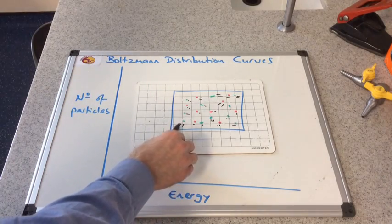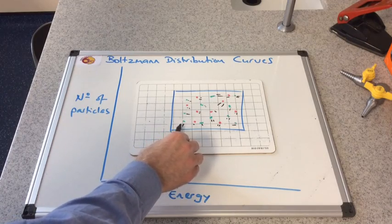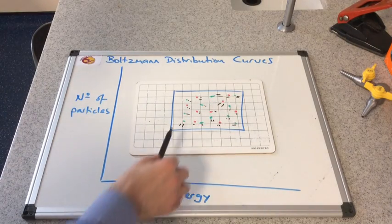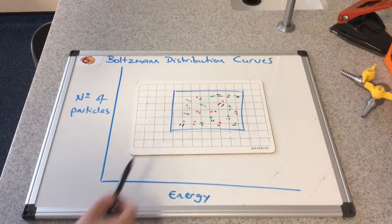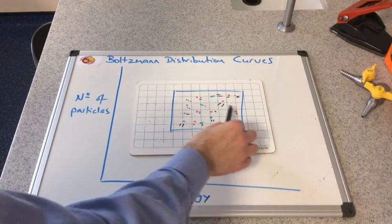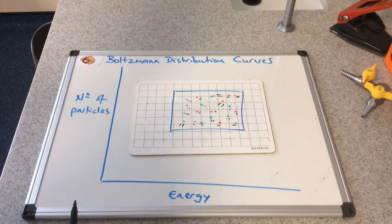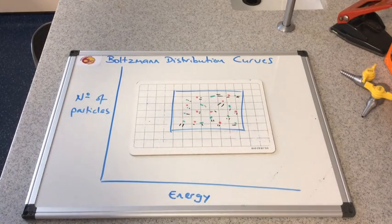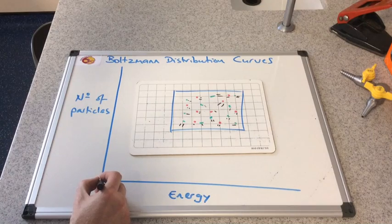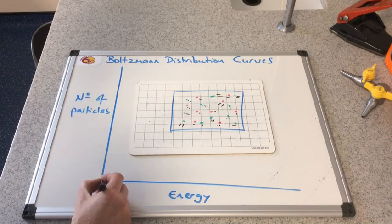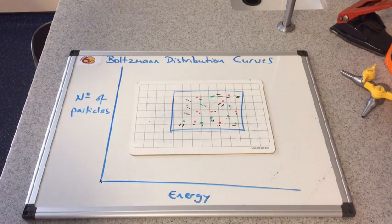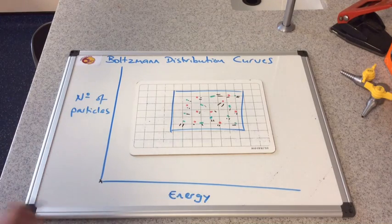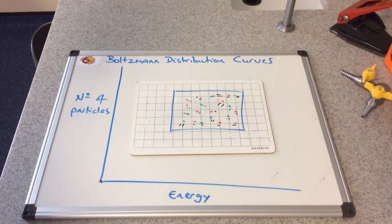So the size of these flashes next to the particles is a representation of their energy. So the first thing to point out is that every single particle has got some energy. So that means that this distribution curve must start at the origin. No particles with no energy.